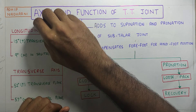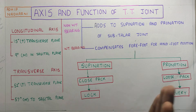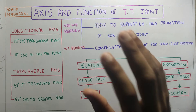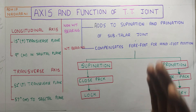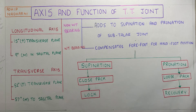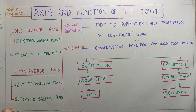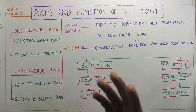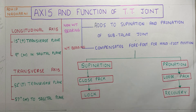To summarize: the transverse tarsal joint has a longitudinal axis allowing inversion and eversion, and a transverse axis allowing plantar flexion, dorsiflexion, abduction, and adduction. Its functions are: in non-weight bearing, it adds to supination or pronation of the subtalar joint; in weight bearing, it compensates the forefoot for hind foot position. In total supination the joint gets locked — the forefoot cannot get back to neutral. In pronation it is in a loose pack position, allowing the forefoot to supinate and return to neutral. This is why we see more lateral ankle sprains than medial sprains.